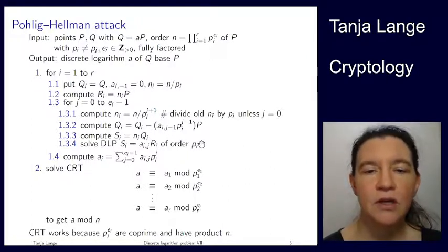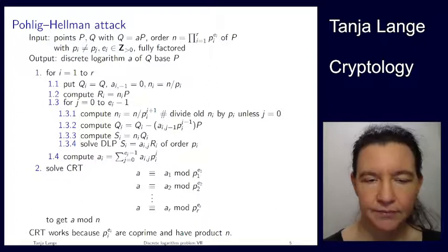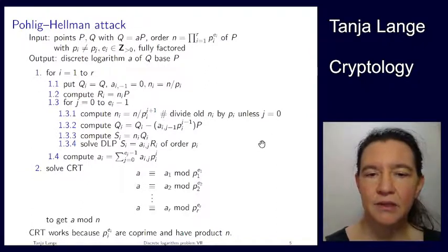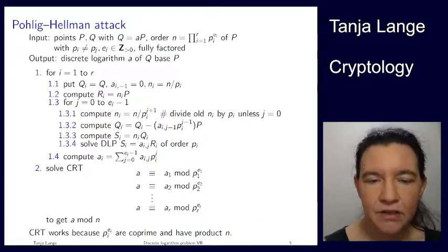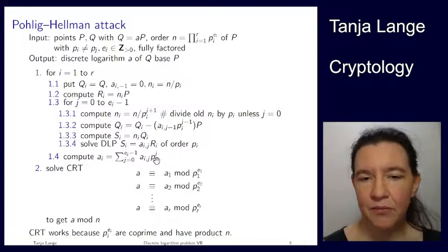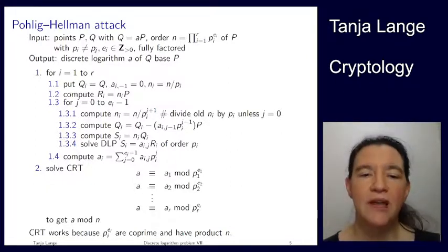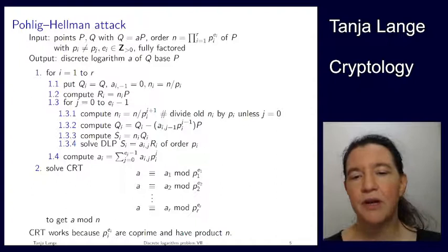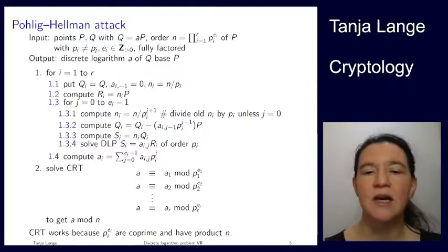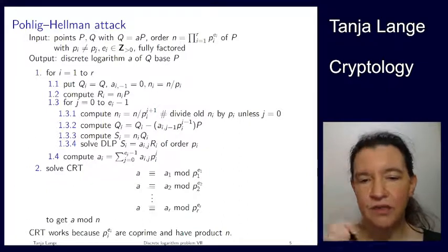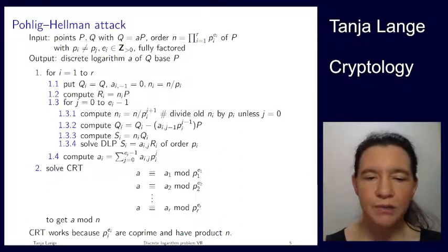Okay, so this is the inner loop. We run through this ei times. Once we're done with the prime, then we put things together, we're computing ai actually, with the right powers of pi. And now we're getting, after this, we're having this system of congruences. So we're having a is congruent to a1, modulo p1 to the e1, congruent to a2, mod p2 to the e2, etc., all the way till congruent to ar, mod pr to the er.